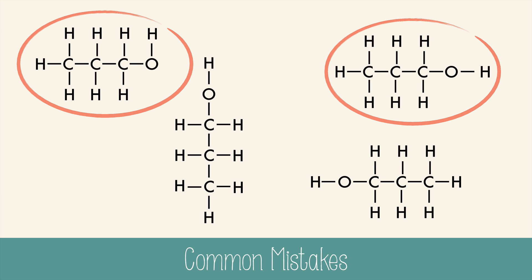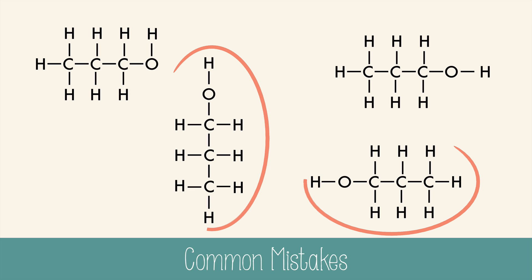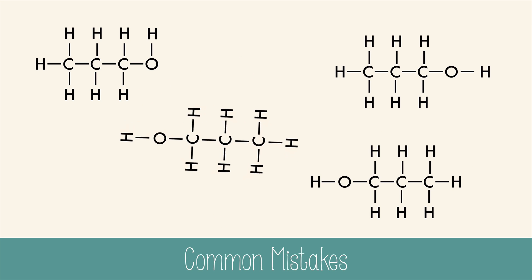Hydrogen can only make one bond with oxygen. These look different because they've been drawn at different angles, but if you can rotate a drawing and it becomes the same as another drawing you have, then they're not different isomers. They're actually the same thing.